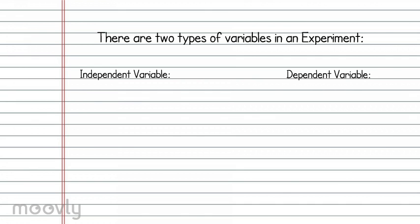The independent variable is the thing that you're changing. The dependent variable is what you're measuring.